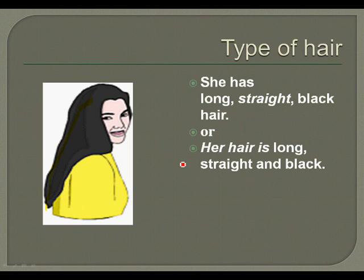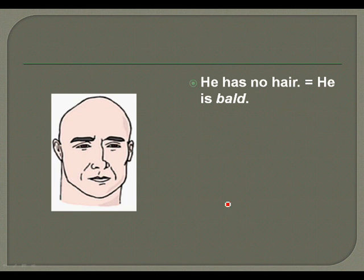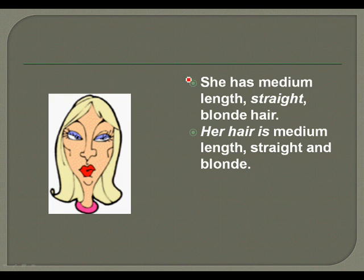Now for type of hair. She has long, straight, black hair — or her hair is long, straight, and black. She has short, straight, black hair — or her hair is short, straight, and black. If a person has no hair, we say he is bald — he has no hair, he is bald.